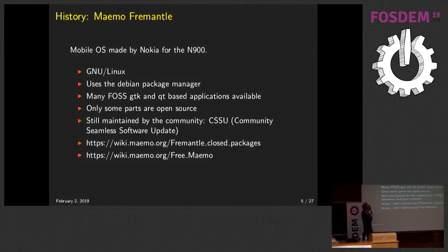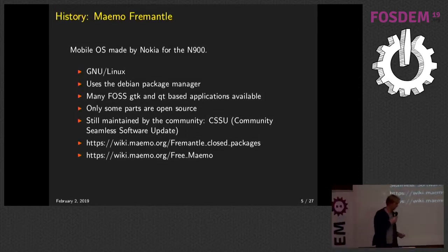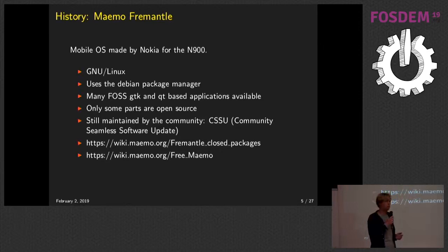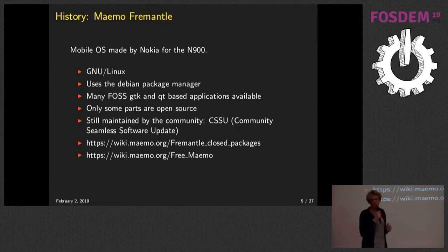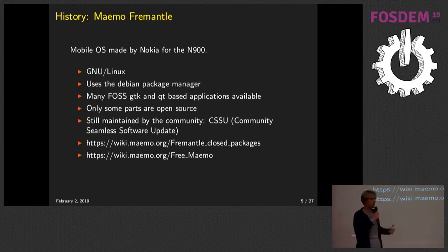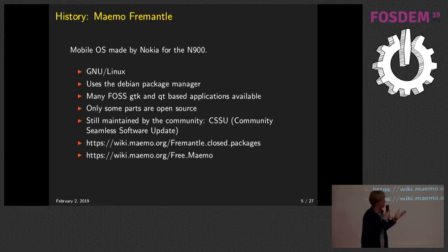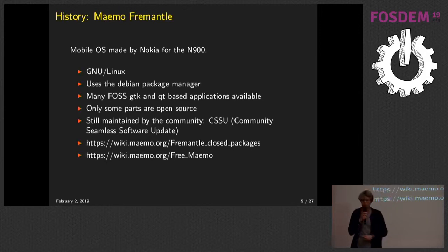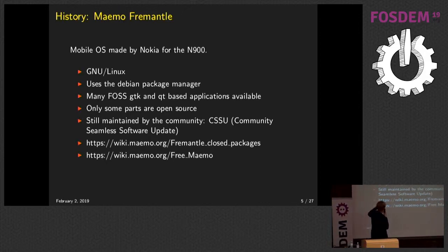A little bit of history: Nokia and the Nokia N900 — I think it's the first hacker phone. Nokia had a series of internet tablets: the N770, N800, N810, and the N900 was the first one to also make phone calls. It was based on GNU Linux — one of the first widely shipped phones based on GNU Linux, maybe also one of the last. It used a package manager, mostly GTK and Qt, and most applications were open source. It's still maintained by the community with security fixes even 10 years in. Unfortunately some parts are not open source, which is what we're trying to fix.